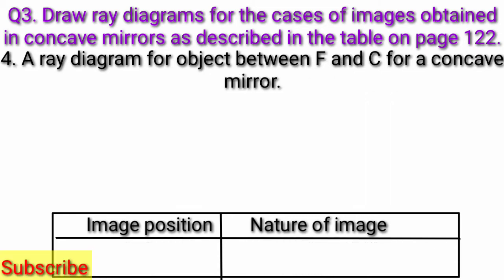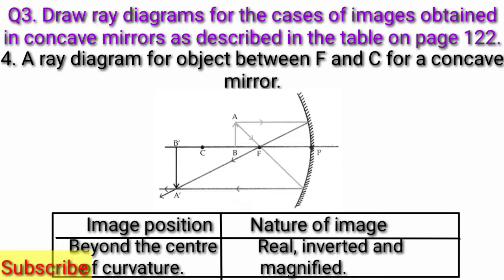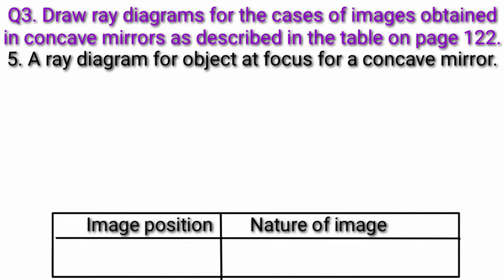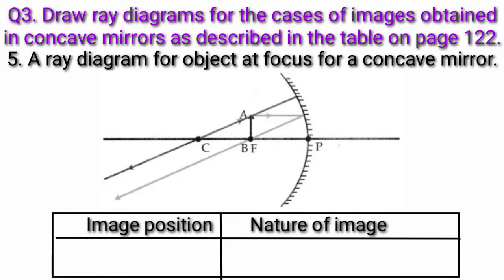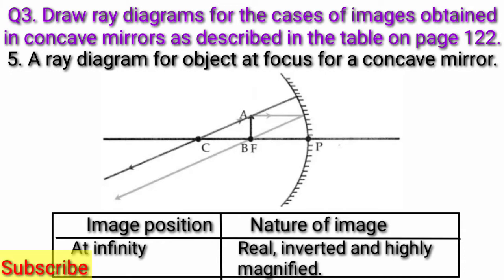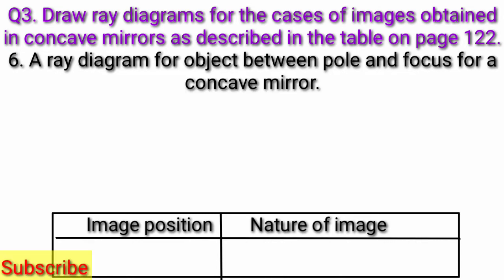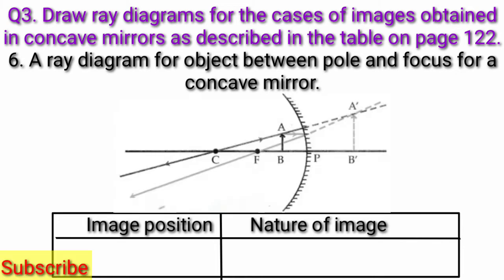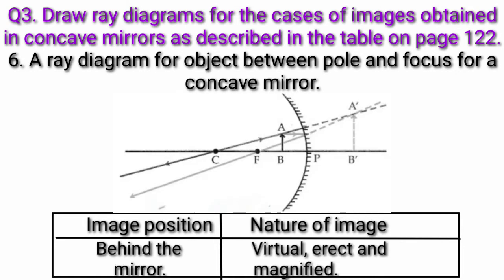Fourth, ray diagram for object between F and C for a concave mirror — image position beyond center of curvature; nature of image: real, inverted and magnified. Fifth, ray diagram for object at focus — image position at infinity; nature of image: real, inverted and highly magnified. Sixth, ray diagram for object between pole and focus for a concave mirror — image position behind the mirror; nature of image: virtual, erect and magnified.